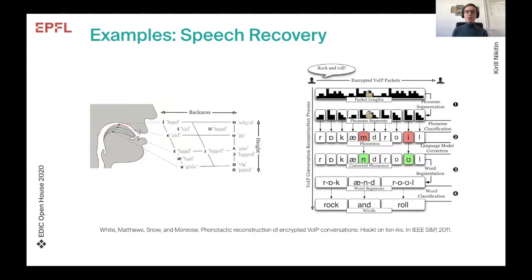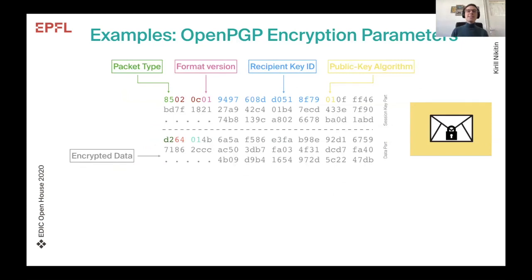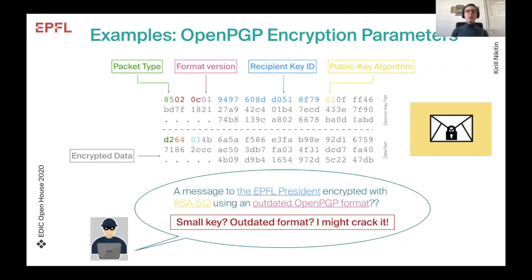Later, Wright et al. actually showed how to derive a full approximate transcript for the whole conversation. And here is an example of clear-text encryption parameters: OpenPGP is a popular format for encrypting files and emails, but in addition to the encrypted payload it reveals information like a recipient key ID and public key algorithm in a clear-text header. Sometimes an adversary can use this clear-text metadata to simplify the job of cracking the algorithm.